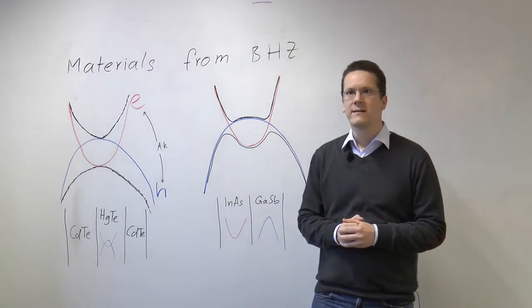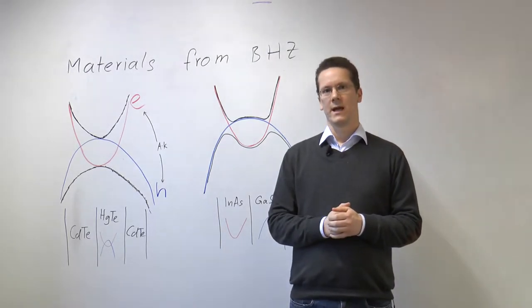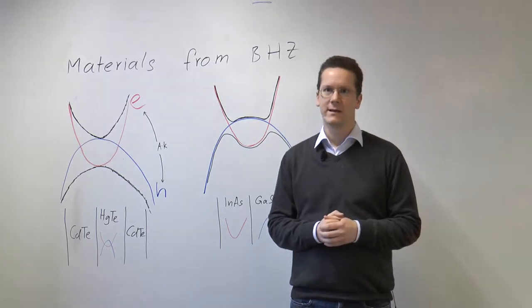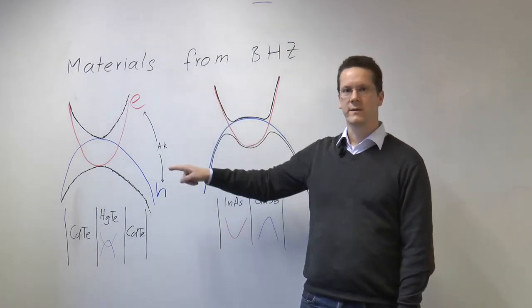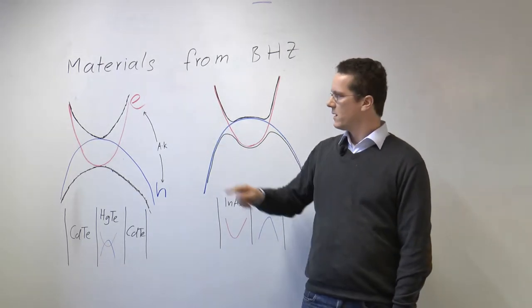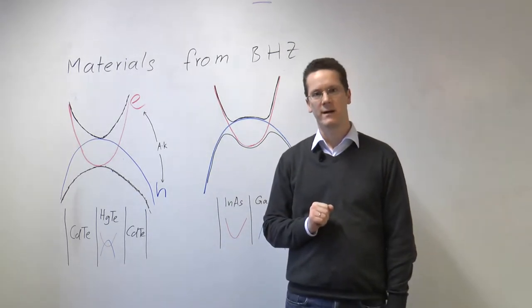So let's first recapitulate the BHZ model. In the BHZ model you have four ingredients. First, you have a band of electrons with a positive mass. Second, you have a band of holes with a negative mass.